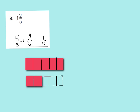I can see by my model that I have 1 whole and 2 fifths. Counting as an improper fraction, I count all the shaded parts: 1, 2, 3, 4, 5, 6, 7 shaded parts out of my fifths.